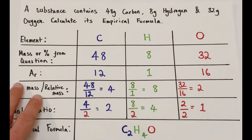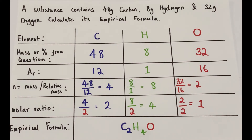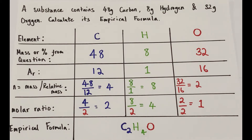You would use something called the grid method. The grid method always follows the same pattern: present the elements in columns, write down their masses from the question. If percentages are given rather than masses, that's fine — they are percentages by mass and work the same way. Ar is the relative atomic mass from the periodic table. N is the number of moles, calculated by dividing mass by the relative atomic mass of the element. The molar ratio compares moles of each element against each other.